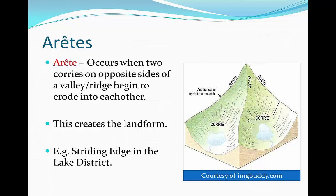As you can see in the diagram here, we have two corries which are eroding into each other and a ridge is located between the two of them. That ridge is called the arête.